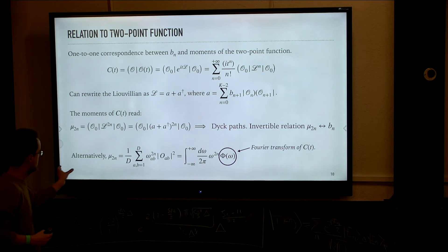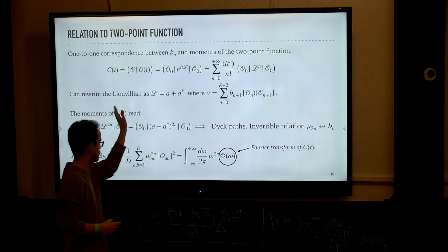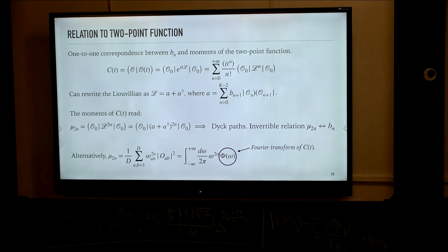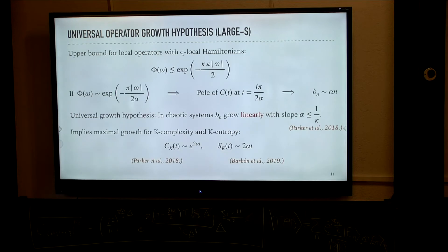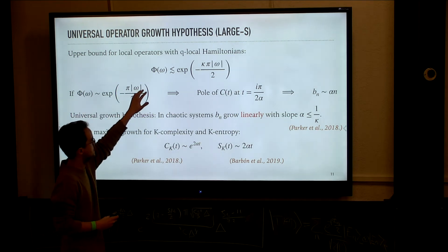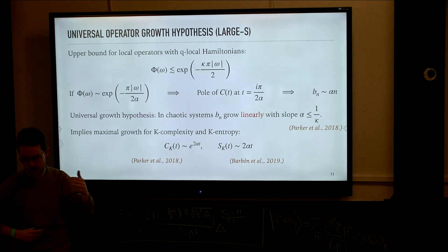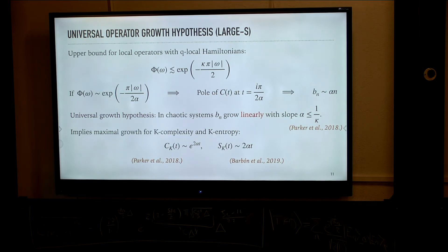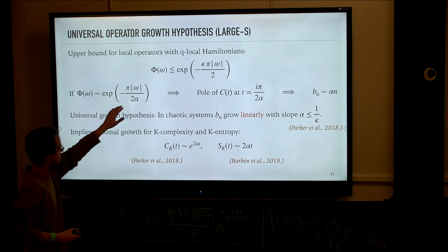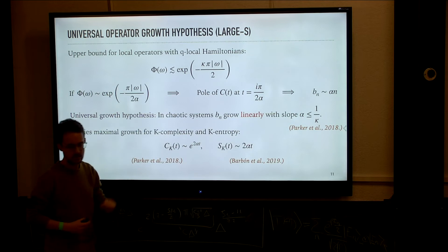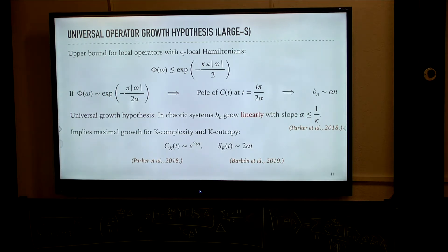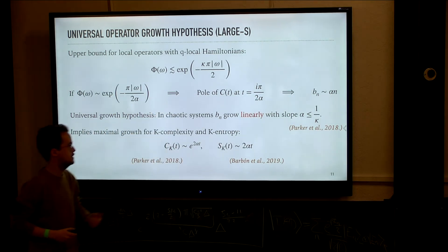It's also useful to note that these moments can be related to the Fourier transform of the two-point function just by a simple integral. Using this, Parker, Altman and company a few years ago formulated the universal operator growth hypothesis in the thermodynamic limit. They start from a known bound on the tails of the Fourier transform of the two-point function: for any Q-local Hamiltonian and any local operator, the Fourier transform of the two-point function has at most exponentially decaying tails, with some factor kappa governed by the geometry of the problem.